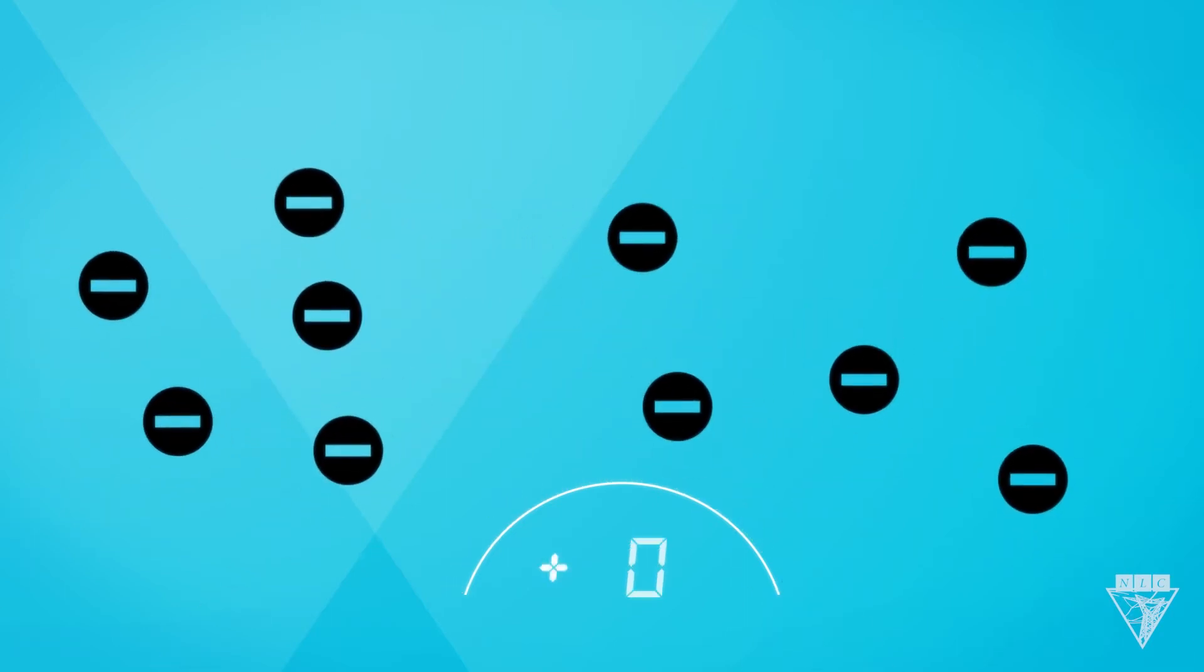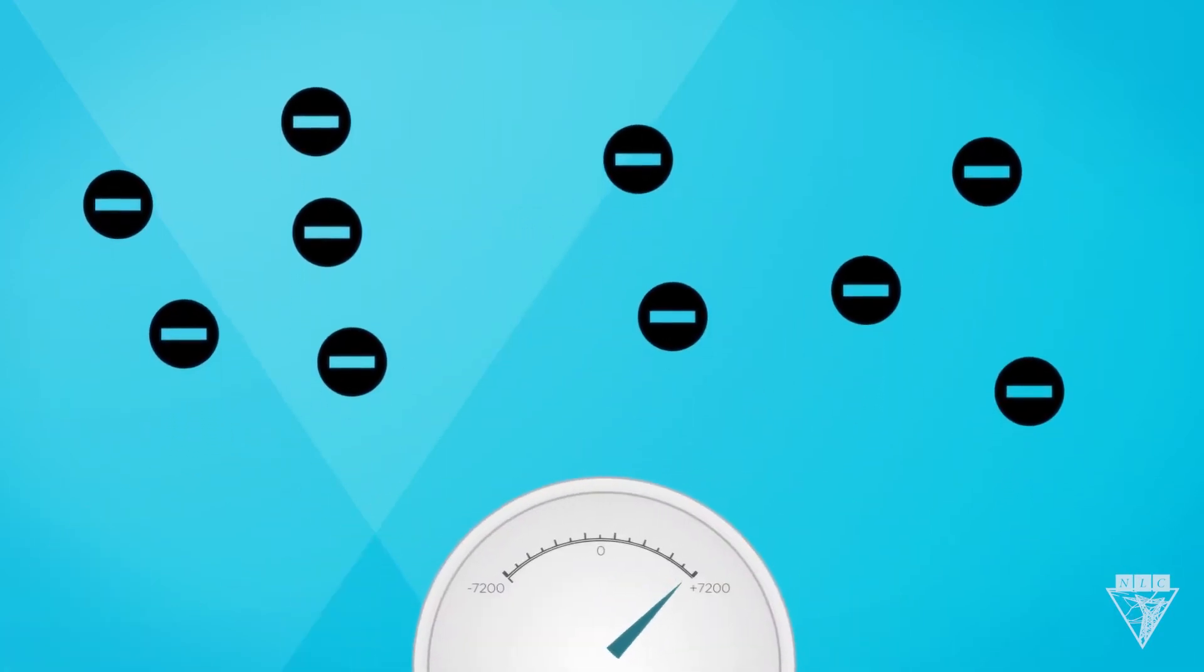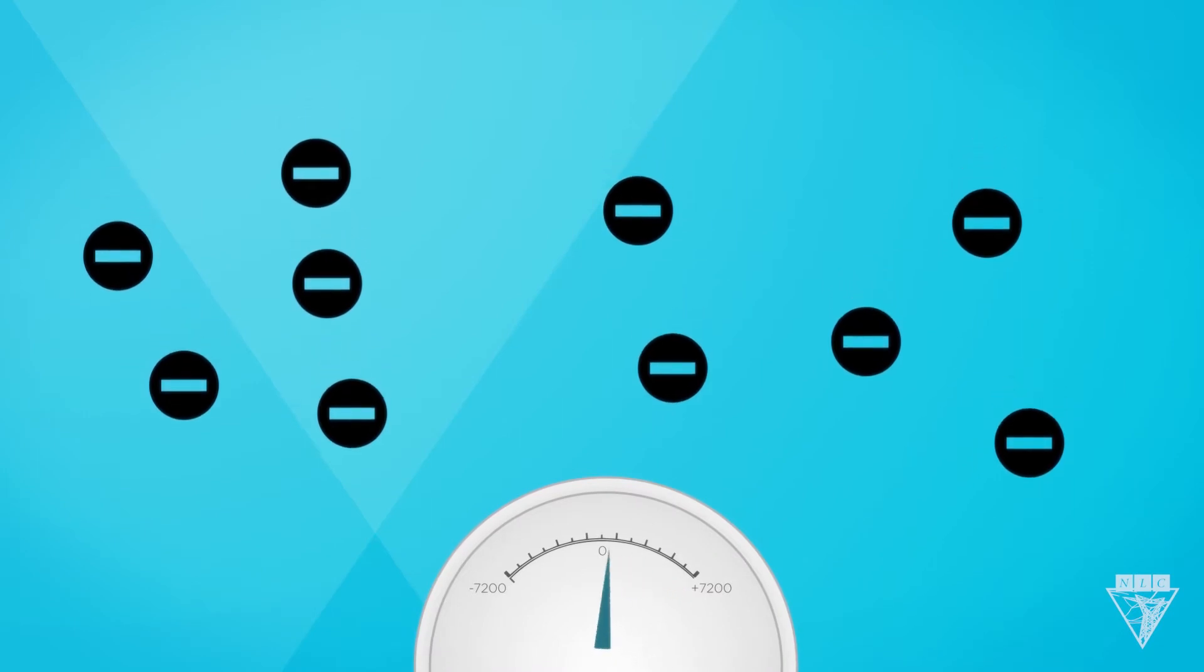So the car is electrons and the speed is the voltage. Negative just means it's going in the opposite direction.